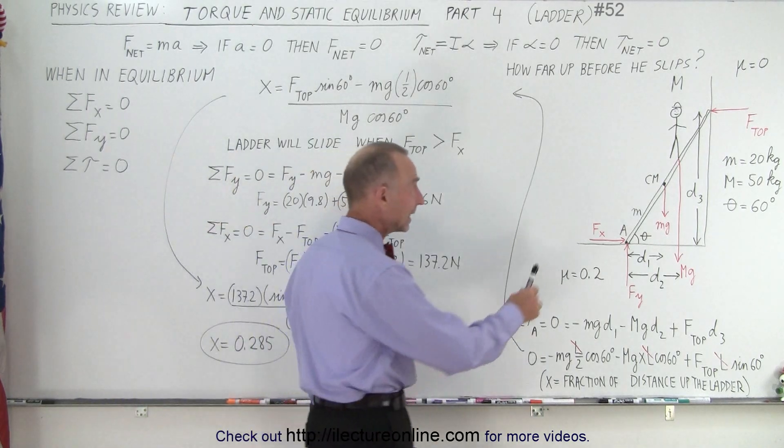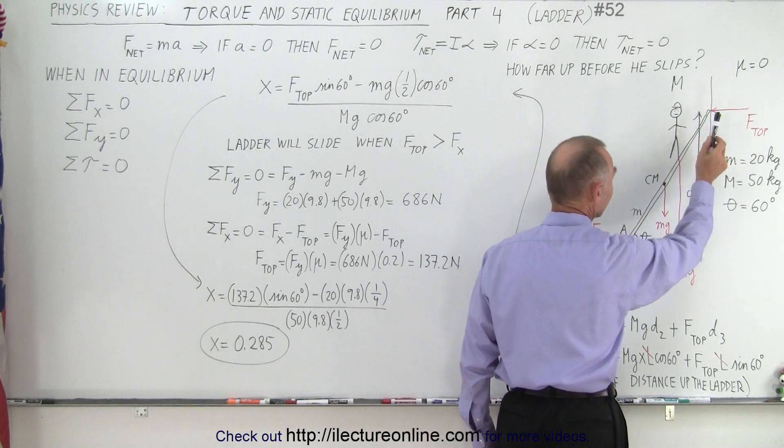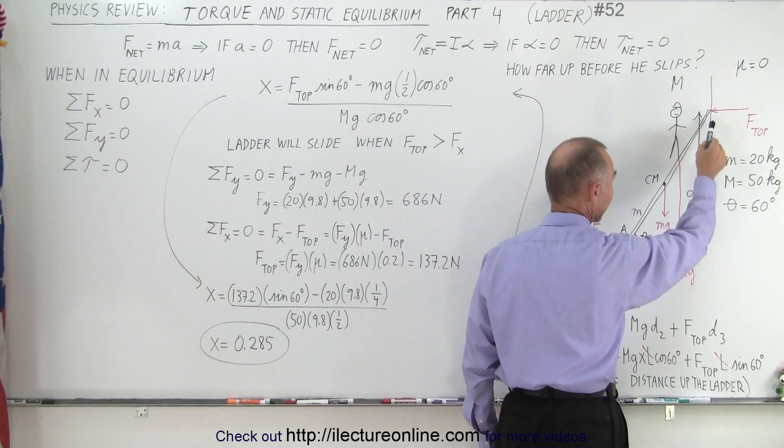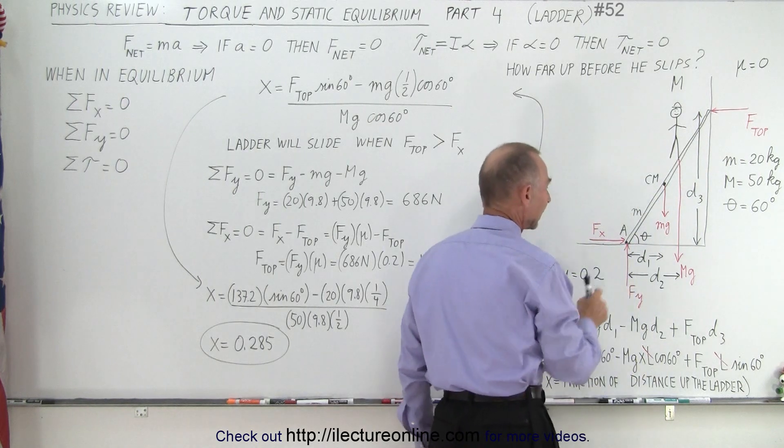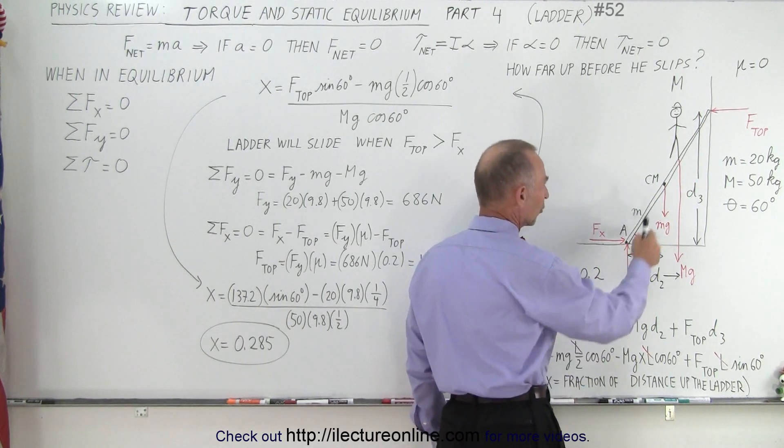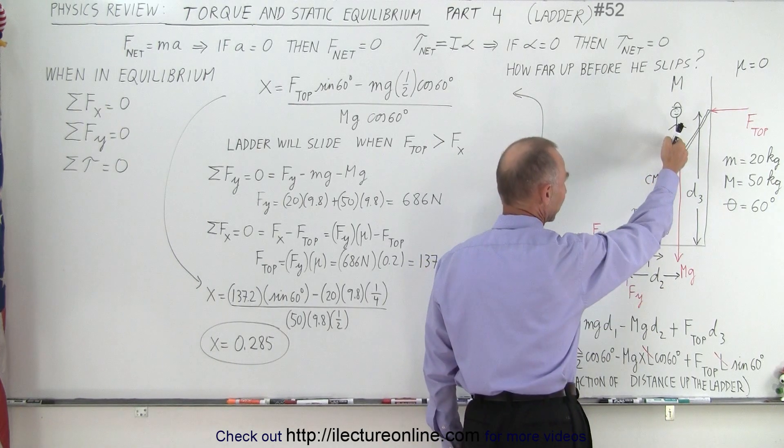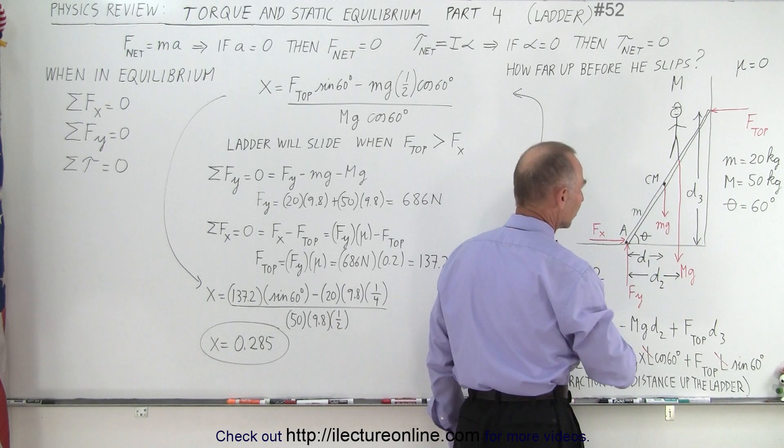We have a ladder leaning against the wall. We take the example where there's no friction against the wall so this ladder at the top can slide freely. And then at the bottom there's friction mu equals 0.2. Notice we have the mass of the ladder which pulls down. We have the mass of the person on the ladder and big Mg.